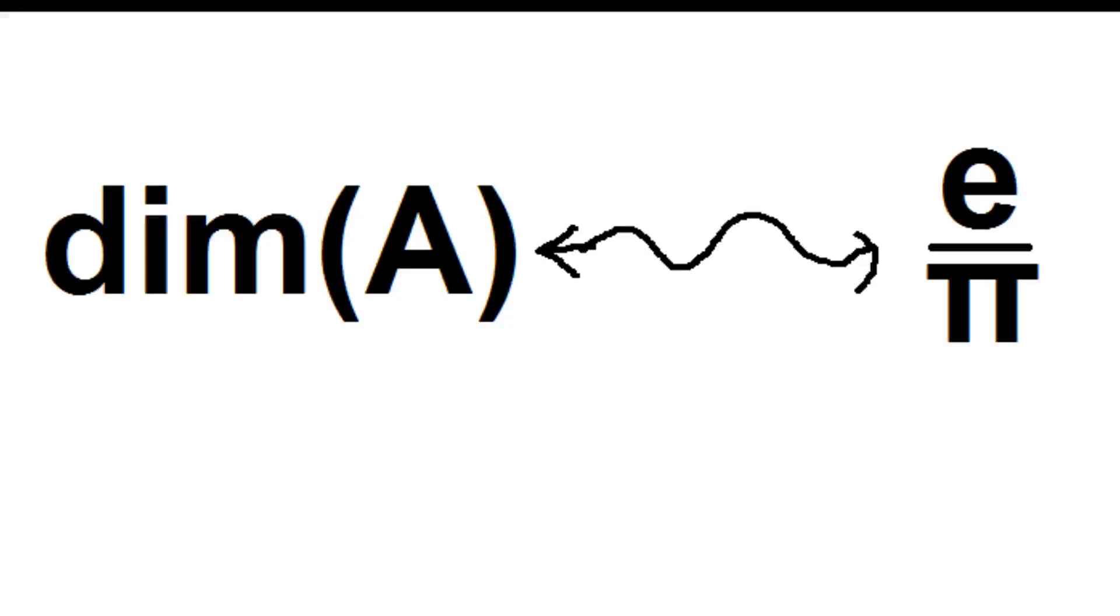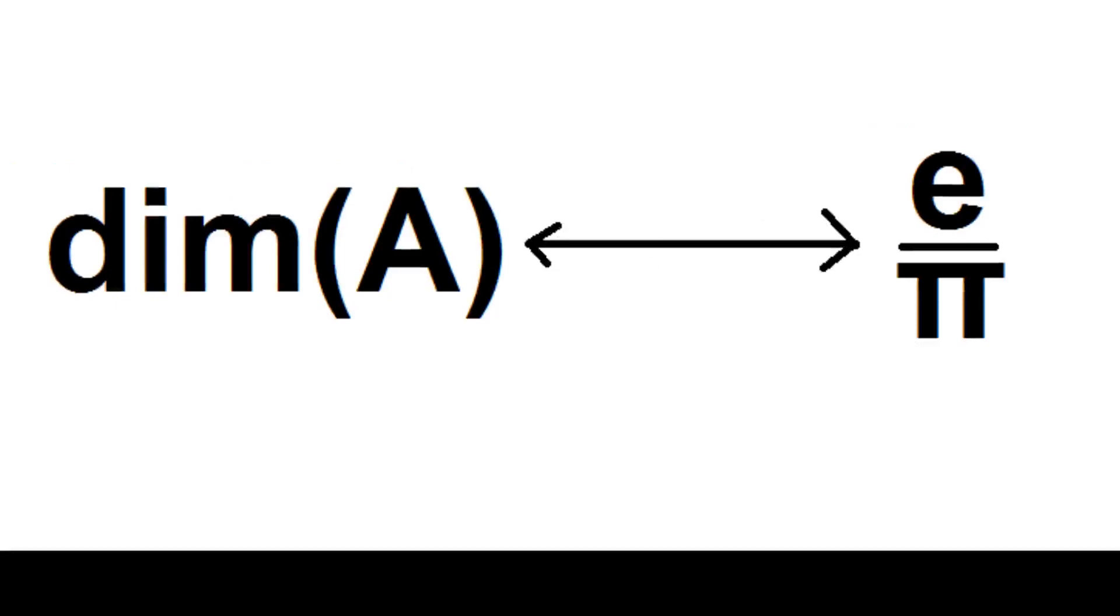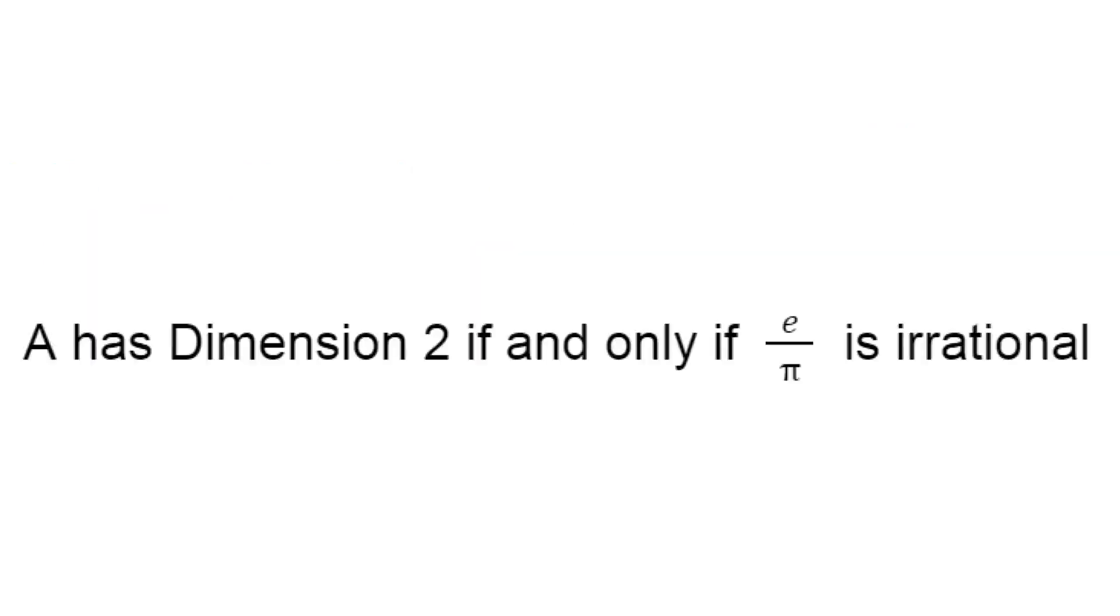We basically showed here that the dimension of A is closely related to e over pi, extremely related actually. We showed that A has dimension 2 if and only if e over pi is irrational.